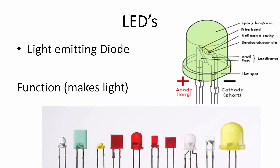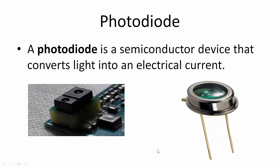The first type is LEDs — light-emitting diodes. Their function is basically to make light. One common form is the through-hole type, and you can identify the negative side by the little flat part on the outside of the LED. They come in different shapes and sizes.